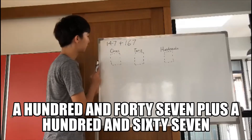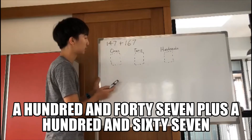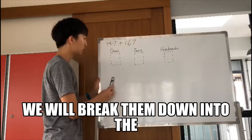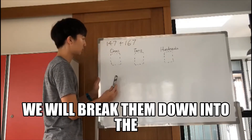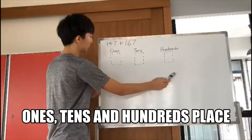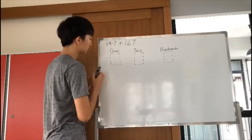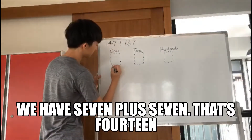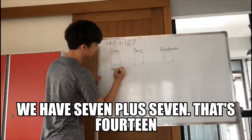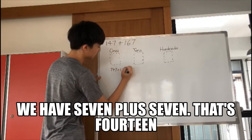A hundred and forty-seven plus a hundred and sixty-seven. We will break them down into the tens and hundreds place. For the ones place, we have seven plus seven — that's fourteen.